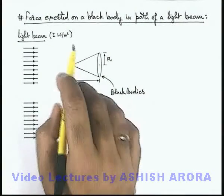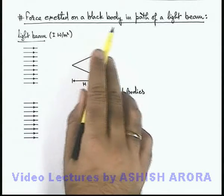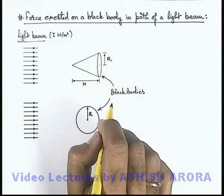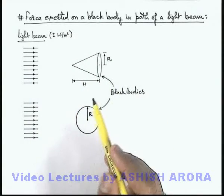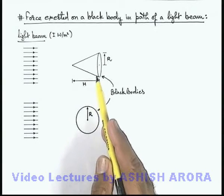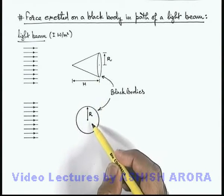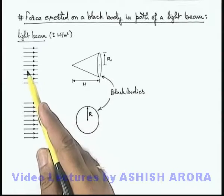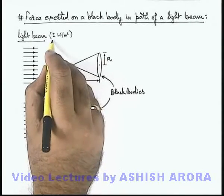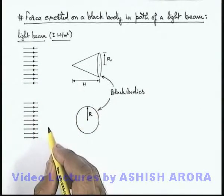Let us discuss the concept of force exerted on a black body in the path of a light beam. Here we can see there are two black body objects: one is a right circular cone and the other is a sphere, which are placed in the path of a light beam having intensity I watt per meter square.